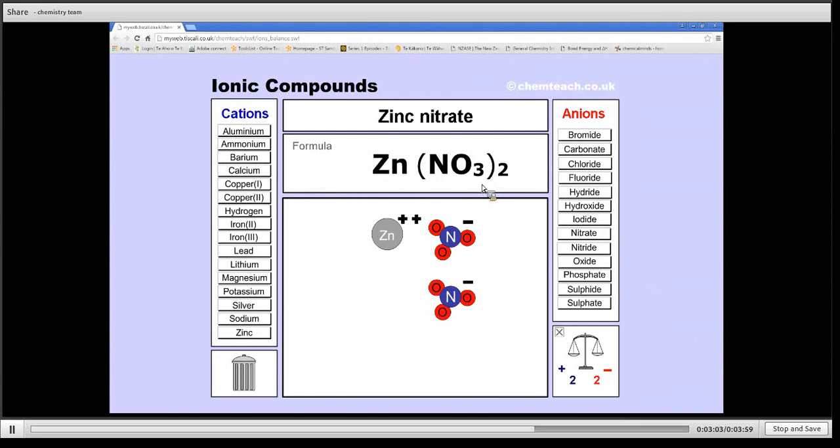We add the brackets because if we have left them out it would be Zn, NO3, 2, so it would look like 32 oxygens, whereas we know we've got 2 nitrogens and 6 oxygens in our compound.